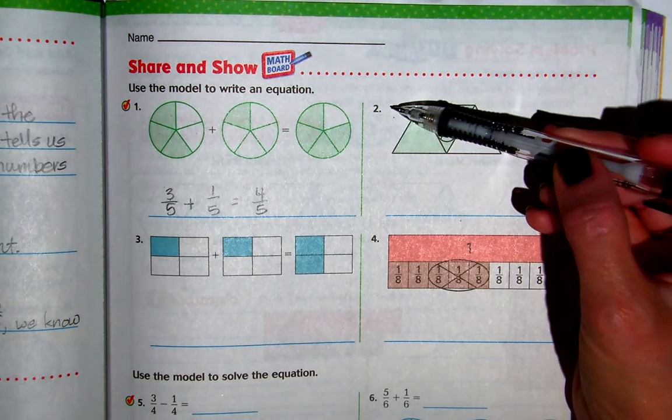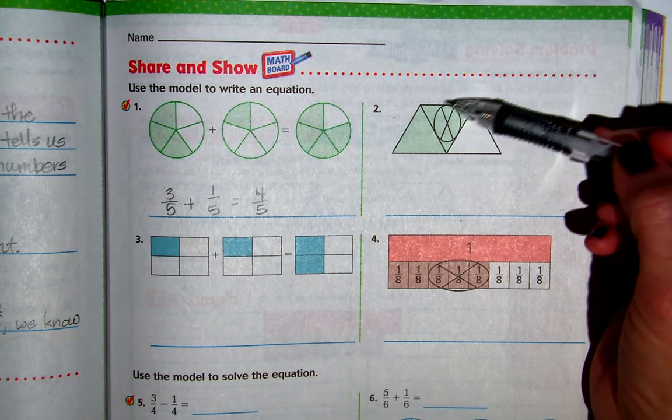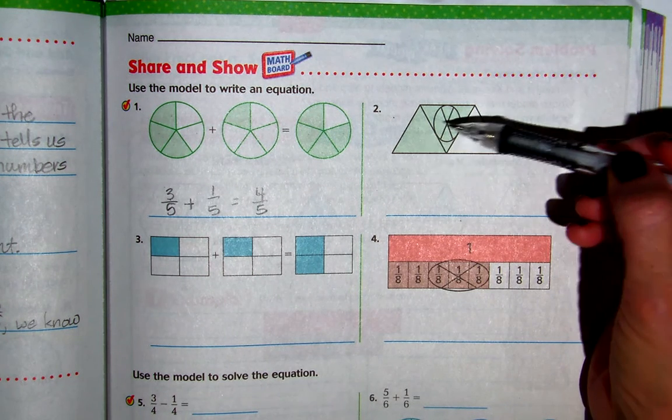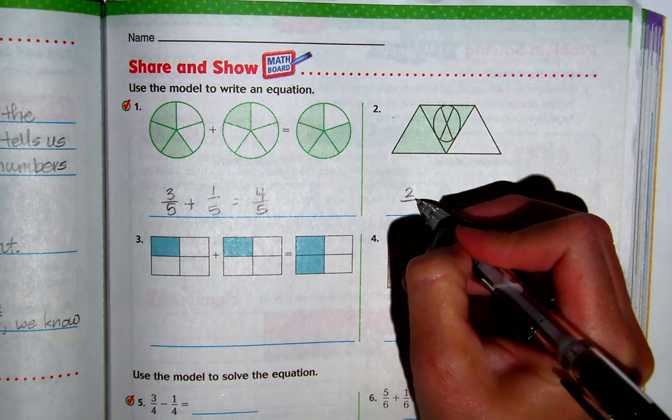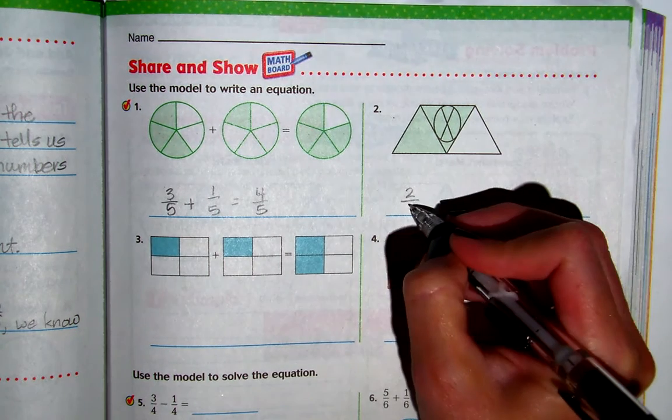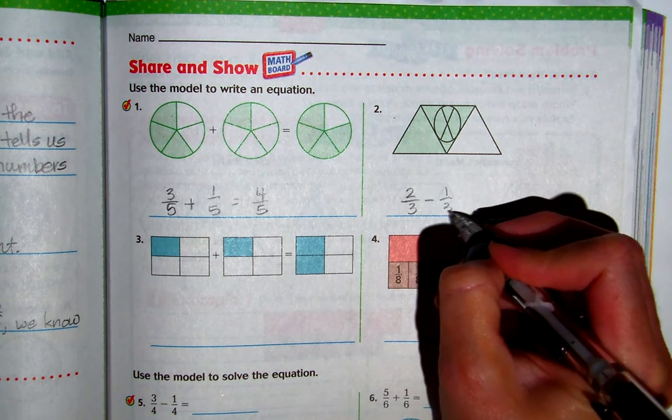Number 2. Now this one shows a subtraction, right? This shows where we are taking one away. So we have 1, 2 out of, 2 is our numerator, 2 pieces shaded. There are 3 parts of the whole. So 2 thirds minus 1 third equals 1 third.